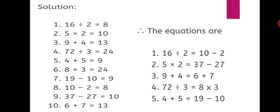Let us have a look at the second operation. 5 into 2 is our left hand side. The answer is 10. Another operation whose answer is 10 is 37 - 27, which is also 10. So we can match these two operations and form an equation: 5 × 2 = 37 - 27.